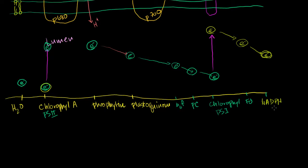If you have this electron going here, getting transferred from one molecule to another, getting excited again, then keeps going all the way, eventually being accepted by NADP+ to become NADPH — where does that H come from? That H is a proton. It gets that electron, and then they merge together and you have NADPH.